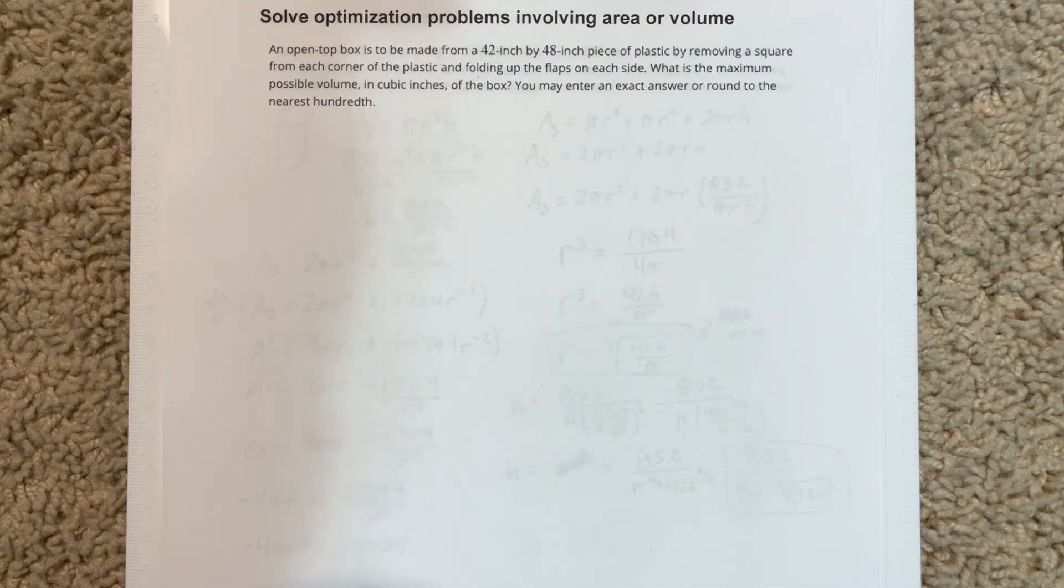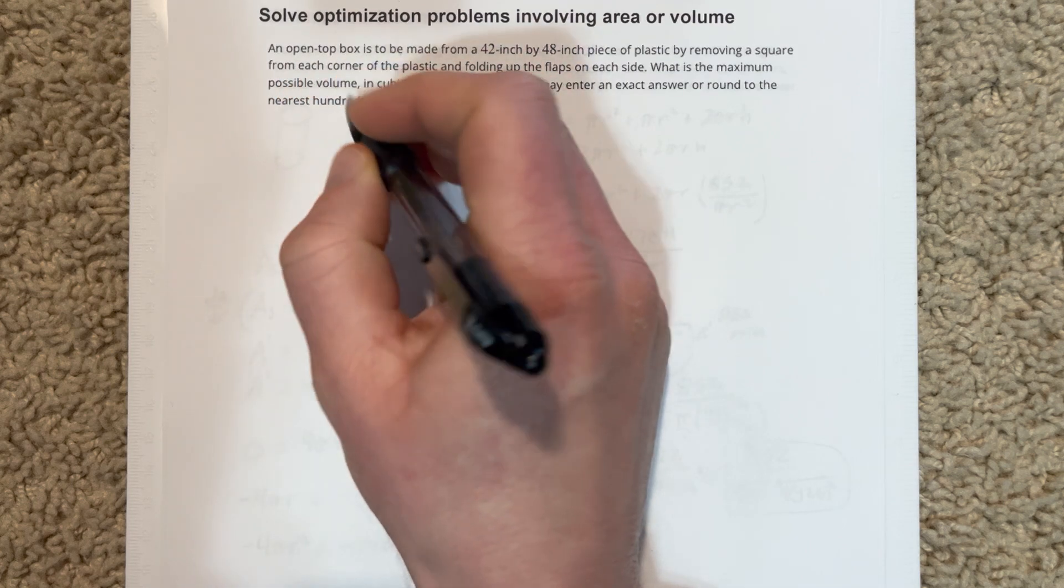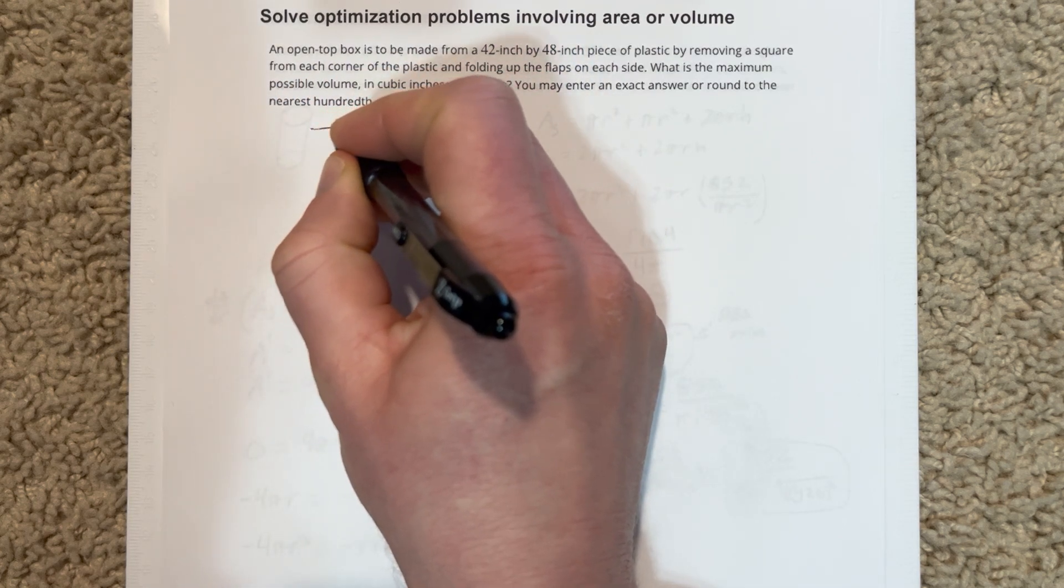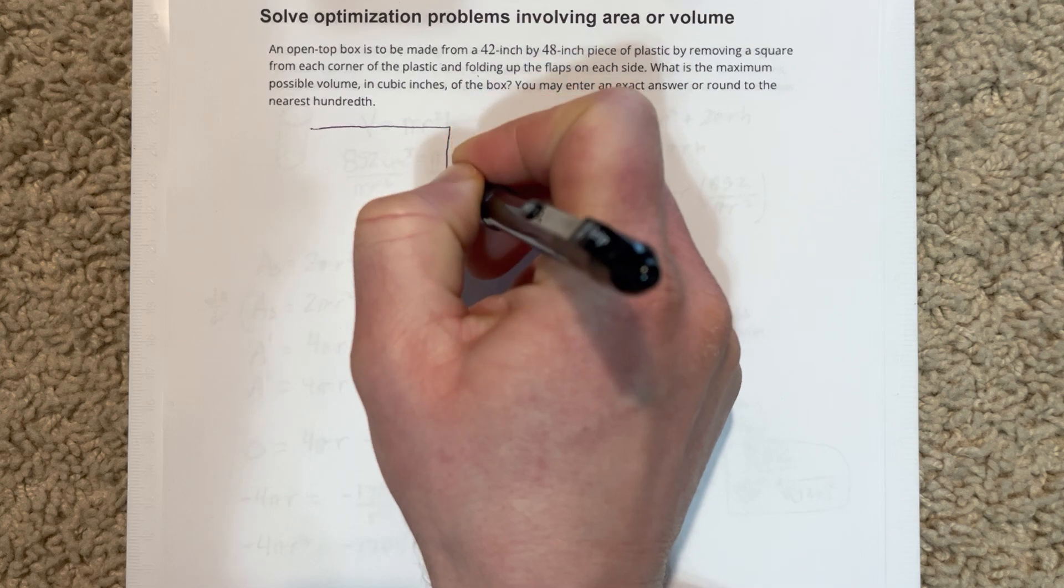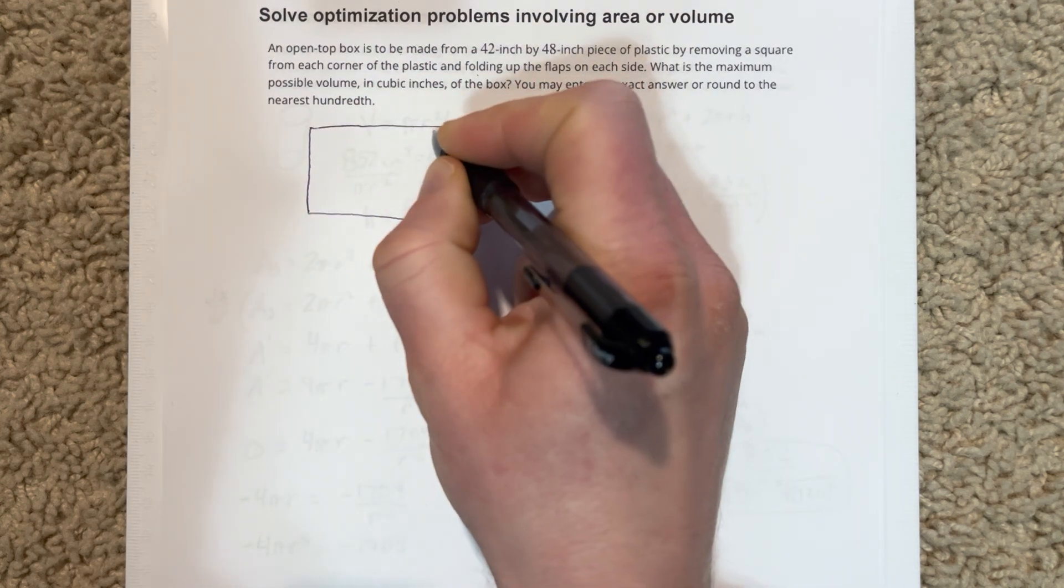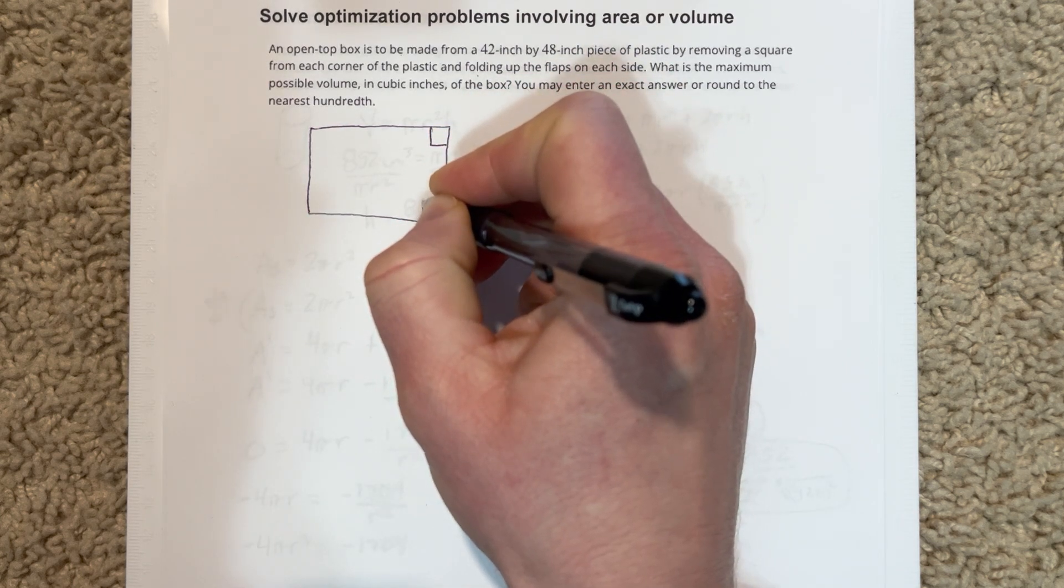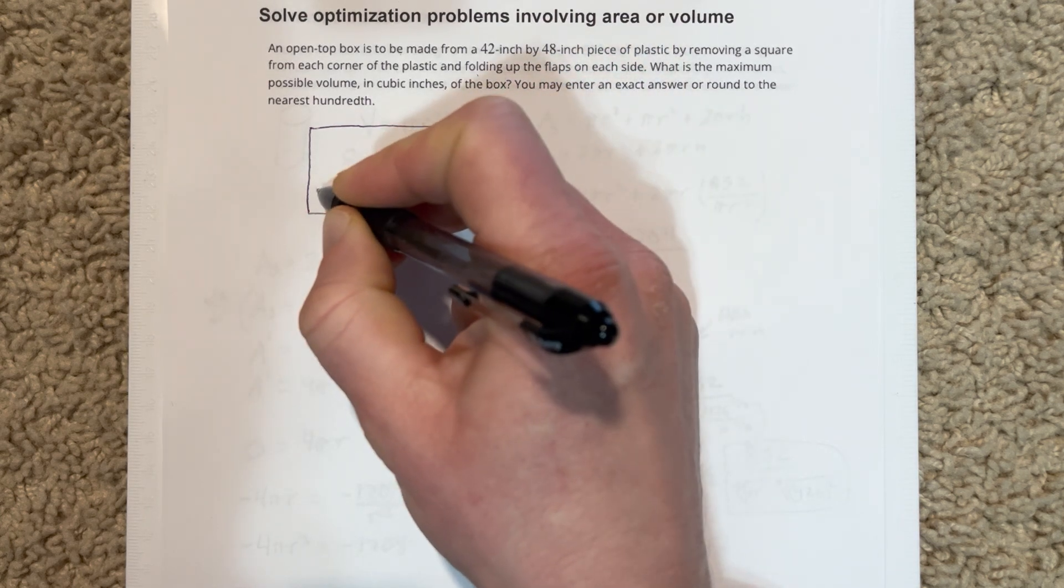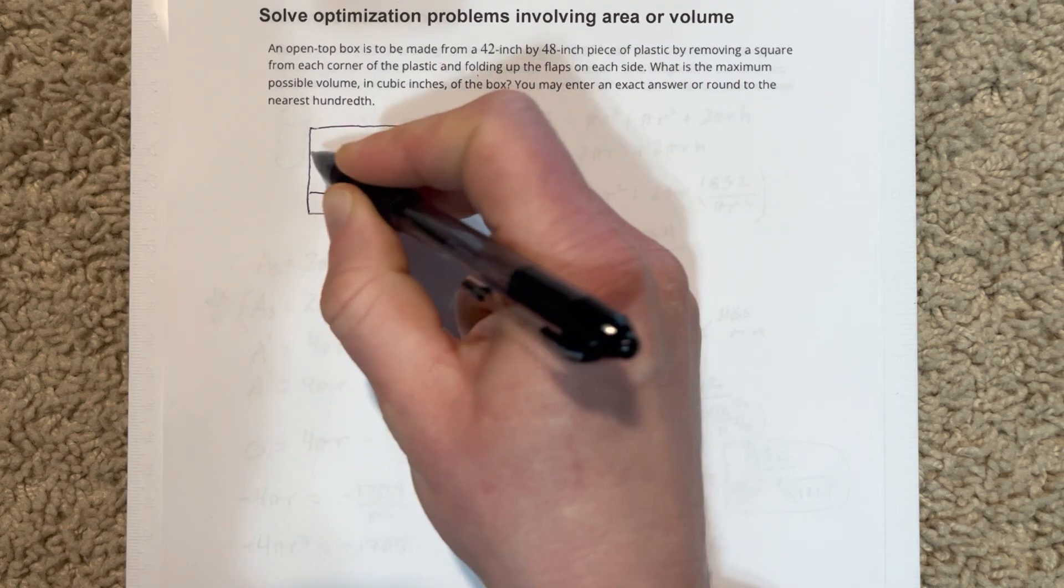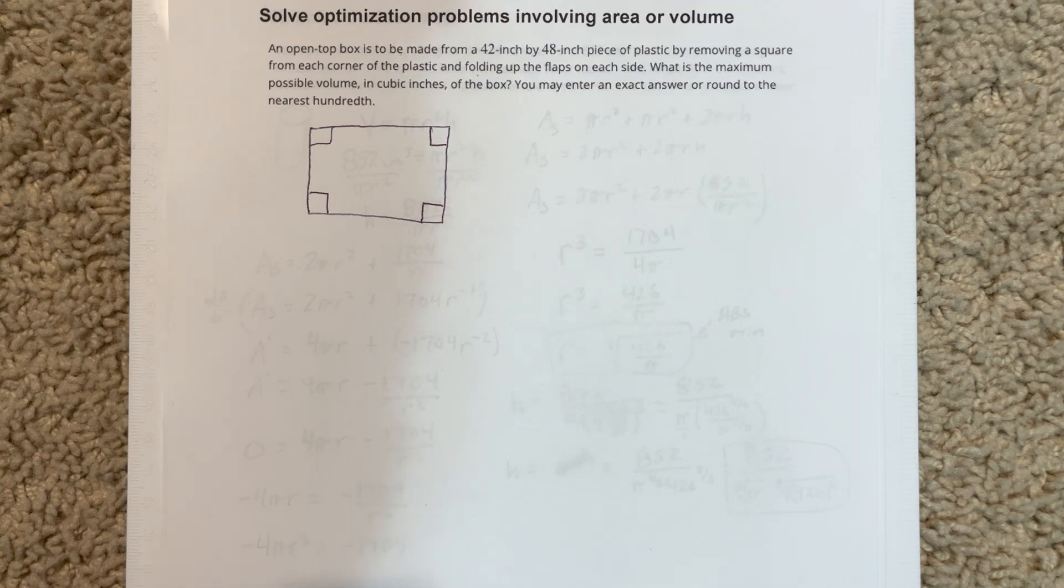So first of all, let's draw what this box looks like. So an open top box, we have a box that looks like this and then in each corner we've got some flaps. So this is like a box that you would maybe get from JCPenney back in the day where it's folded up and you have a piece of clothing that you get at Christmas in this box. An open top box would mean it just folded in the corners.